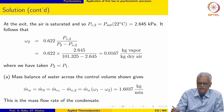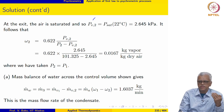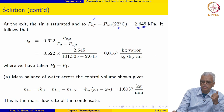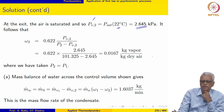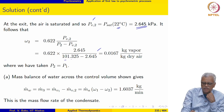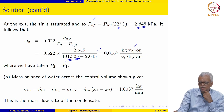At the exit, the air is saturated, so the partial pressure of water vapor equals the saturation pressure at the mixture temperature of 22°C. From the temperature table, this is 2.645 kPa. Evaluating ω₂ at the exit in the same manner, with constant mixture pressure, gives 0.0167 kg vapor per kg dry air.